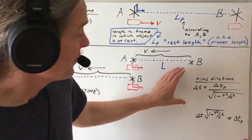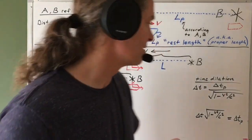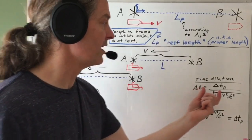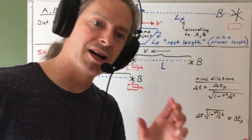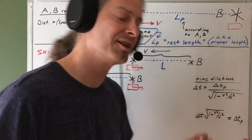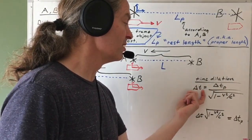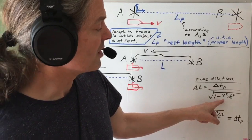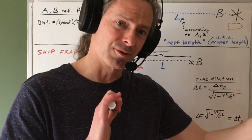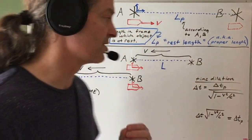Hi everybody. In a previous video, I derived the time dilation formula, which says, more or less, that time is relative. Here's the more precise sense: the time dilation formula says that the so-called proper time — the time interval for a process which happens in a frame of reference in which the whole process happens at the same location — is different than the time interval measured in another reference frame moving at speed v relative to the first. So the duration of a process depends upon the frame of reference in which you measure it. That's the sense in which time is relative.